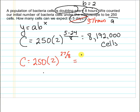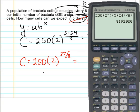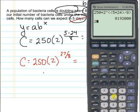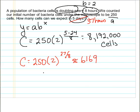And again, we'll bring our graphing calculator over to calculate that. So we've got here 250 times 2 raised to the, now we need to calculate here, 37 divided by 8. Close that parentheses and press enter. And now in those first 37 hours, we will have about 6,169 cells.